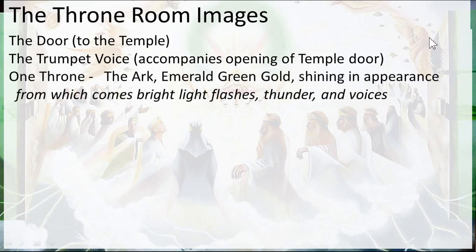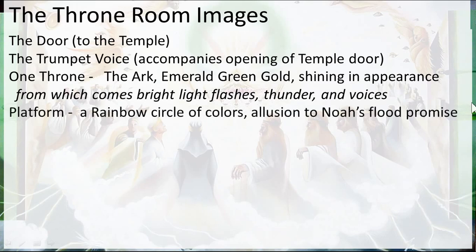The platform the throne is upon is a rainbow circle of colors — an allusion to Noah's flood promise. God sits on the complete circle, not half. Many people think this is in the shape of a flying saucer with multiple rings. There's one sitting on the throne — this is monotheism. There's only one God and his name is Jesus. He first appears as a spirit; you can't look at him, it's light. Then he becomes a lamb slain in the middle of the throne. There's not two on the throne, there's only one.